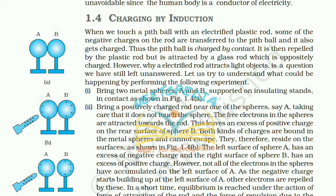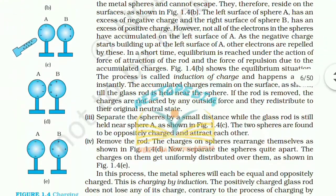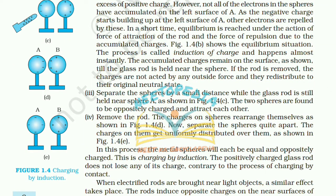To understand charging by induction, consider two metal spheres A and B supported on insulating stands in contact. Bring a positively charged rod near sphere A without touching it. The free electrons in the spheres are attracted towards the rod, leaving an excess of positive charge on the rear surface of sphere B. The left surface of sphere A has an excess of negative charge. A short time equilibrium is reached under the action of the force of attraction of the rod and force of repulsion due to the accumulated charges. This process is called induction of charge and happens almost instantly.